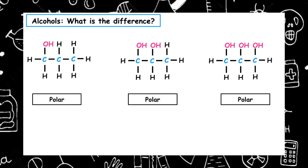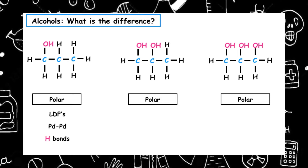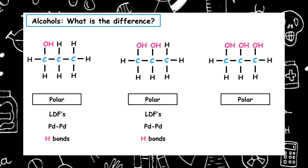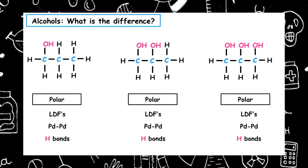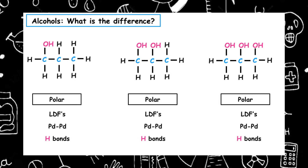We're going to look at the properties, so we have to look at the intermolecular forces that each of these molecules have. We can see that they're all polar because they have differences in electronegativity between the oxygen and the hydrogen of the hydroxyl group. So they all contain London dispersive forces, permanent dipole interactions, and they'll all contain hydrogen bonds.